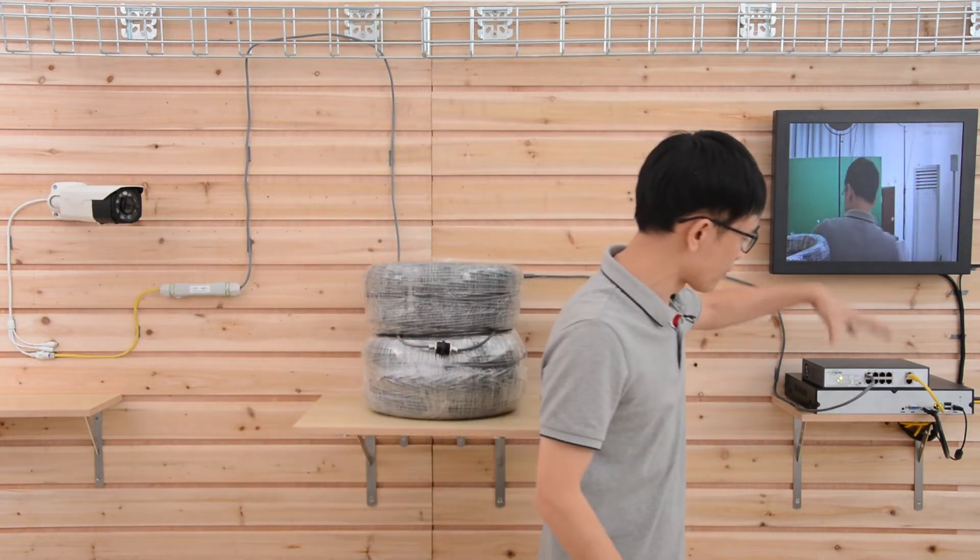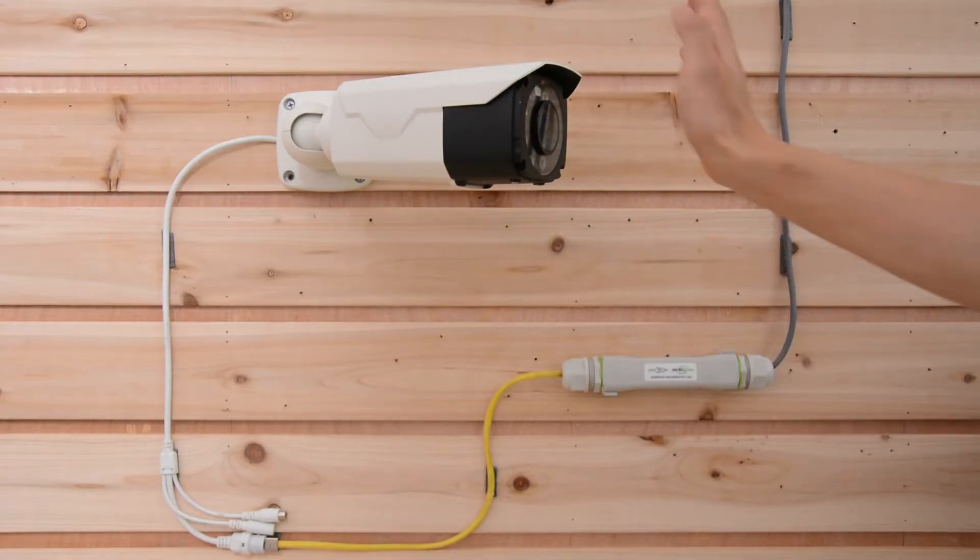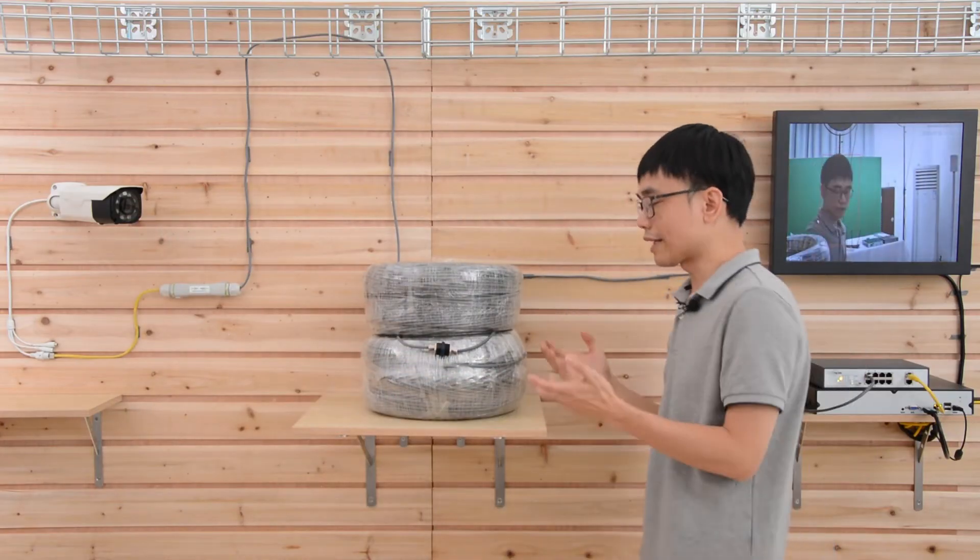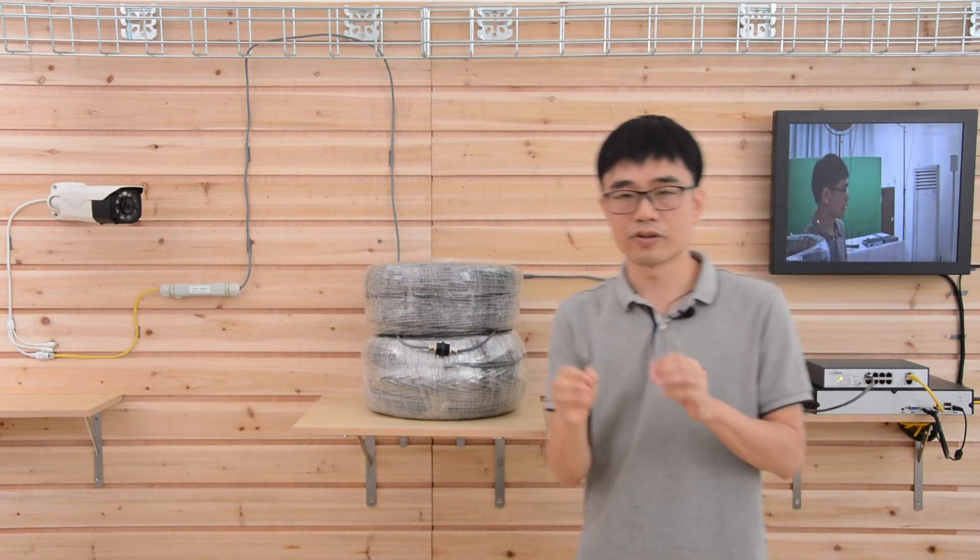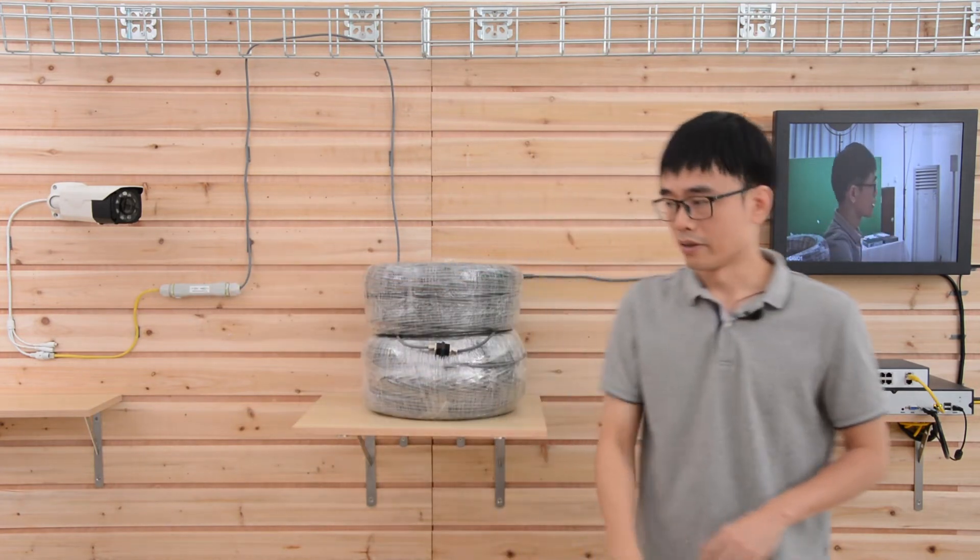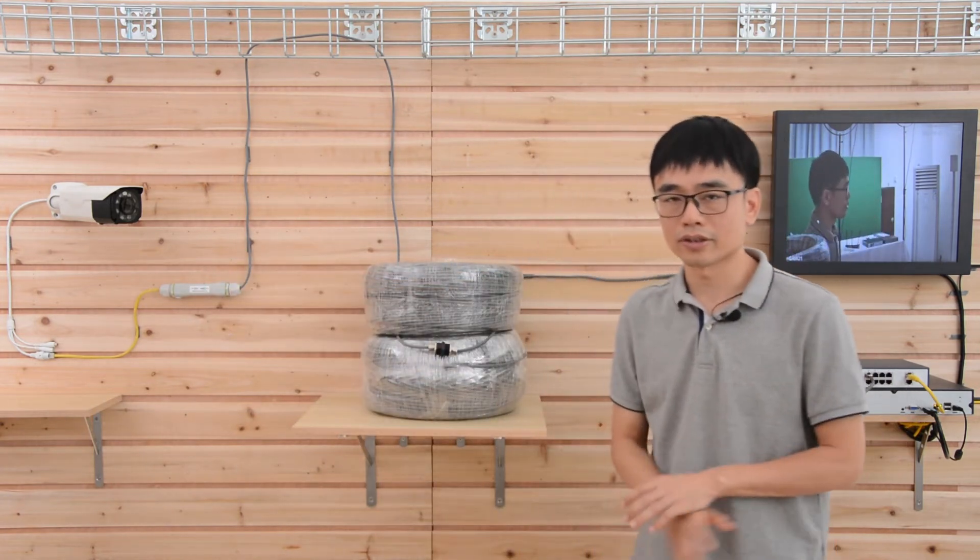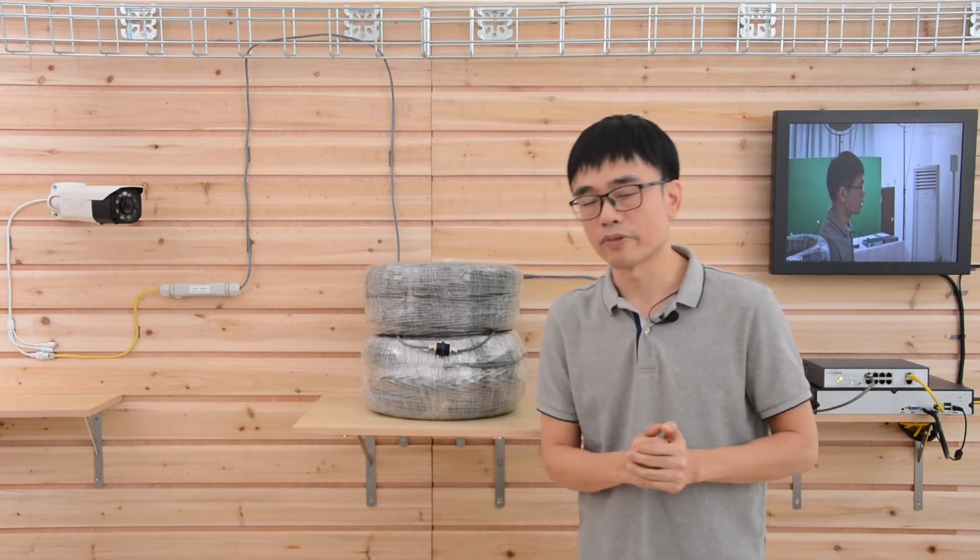So the power is sending from this long run PoE switch and eventually reaches the camera. Now the camera is live. You see, we didn't connect any PoE extender at the middle of this cable. It's just pure continuous run Cat5e from the PoE switch to the camera. There's no need to bury the PoE extender equipment under the ground. We don't need to use the enclosures in the whiteboard we saw.